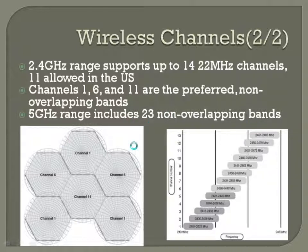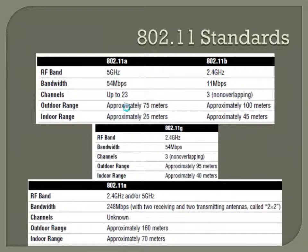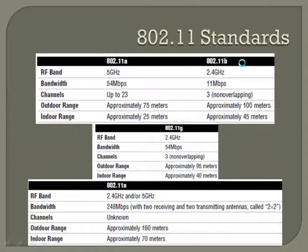The 5 GHz range is used by 802.11a, which is less prevalent these days. I'll explain in a moment why, even though 5 GHz seems like a better option, we ended up going with 2.4 GHz. 802.11a and 802.11b came out at about the same time — 5 GHz for 802.11a and 2.4 GHz for 802.11b. The bandwidth for 802.11a is much higher, up to 54 Mbps — again, that's a theoretical data rate.